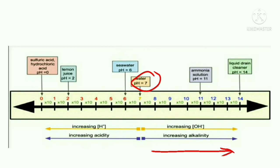If any solution has pH 7, it has low alkalinity. If any solution has pH 8, its alkalinity is 10 times that of 7. For every one digit, alkalinity increases by 10 times.